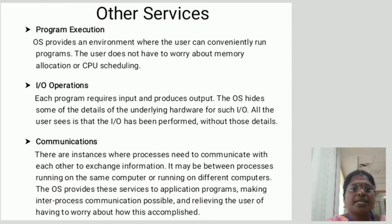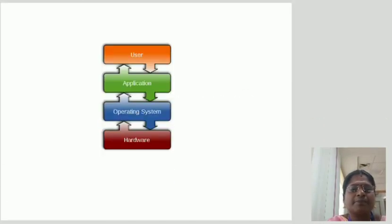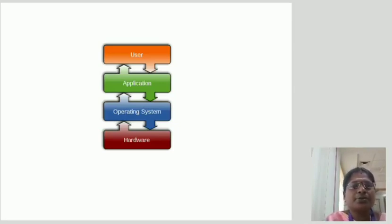The OS provides these services to application programs, making inter-process communication possible and relieving the user of having to worry about how this is accomplished. This picture describes OS architecture: user and application, operating system, and hardware.